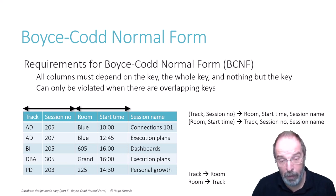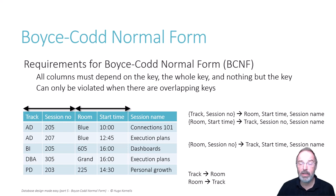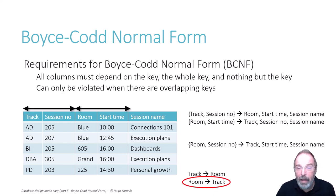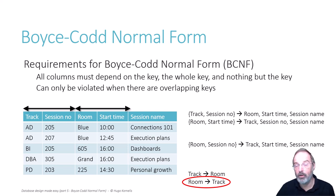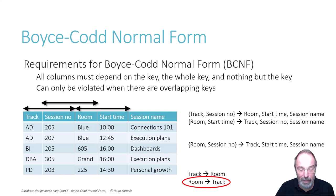They determine just a single other column. But the combination of room and session number in this universe of discourse actually determines track, start time and session name. Why? Because room determines track. So give me a room and a session number, and based on the room I can give you a track and a session number. And we already know that track and session number determines all the rest. So room and session number determine the rest because of this specific extra rule, meaning room and session number is also a key.